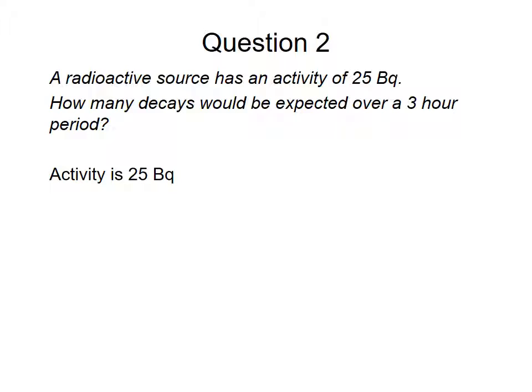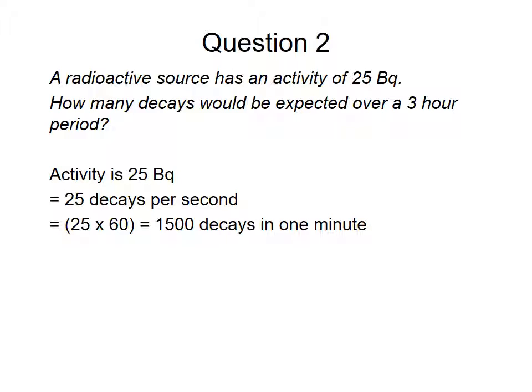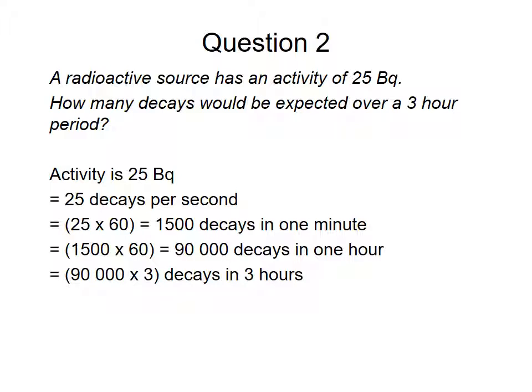So what you should have said, well, the activity is going to be 25 Becquerels, which is equivalent, of course, to 25 decays per second. 25 times 60 is 1,500 decays in one minute. And it's going to be 90,000 decays in one hour, or 90,000 times three decays in three hours, so 270,000 decays.